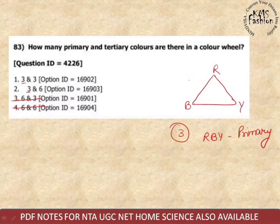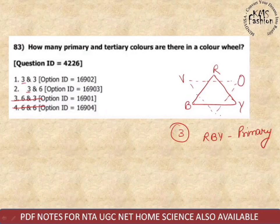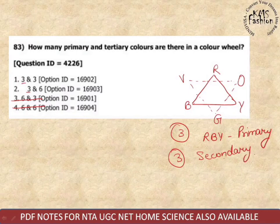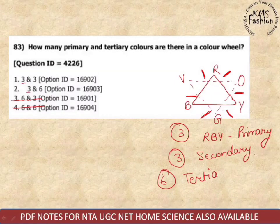After primary, by mixing primaries we get secondary colors. Red and blue give purple/violet; red and yellow give orange; blue and yellow give green — so three secondary colors. Next are tertiary or intermediate colors, formed by mixing one secondary and one primary. That gives us six tertiary colors. So the answer is option second.